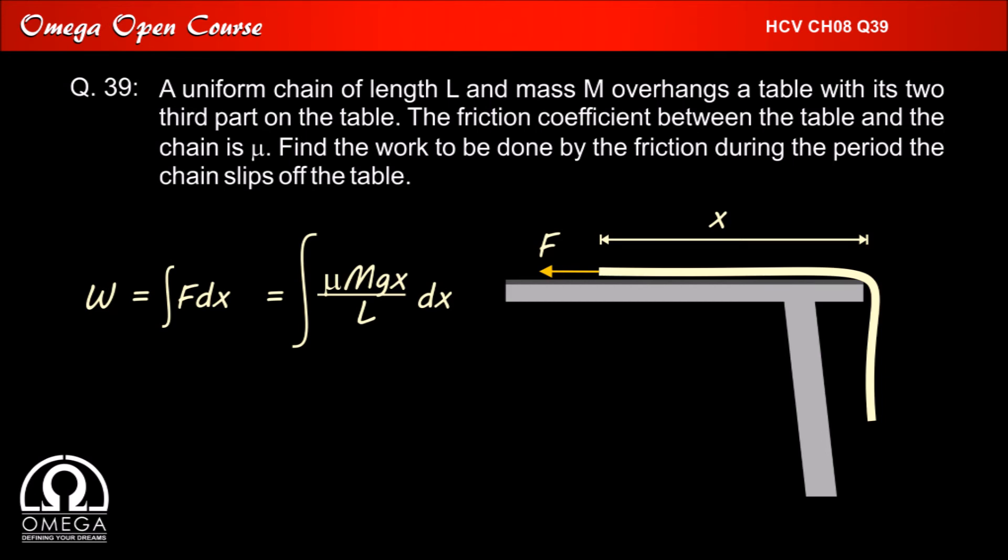Also since initially two third length of the chain is on the table, the lower limit for the integration is 2L by 3. And finally when chain falls off the table, value of x is 0 so upper limit must be 0.